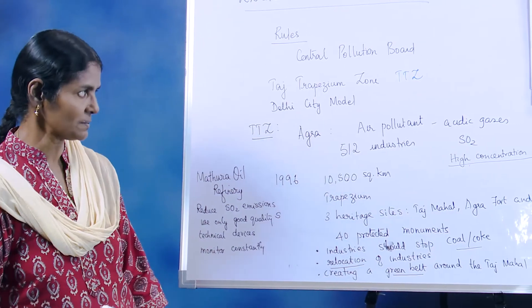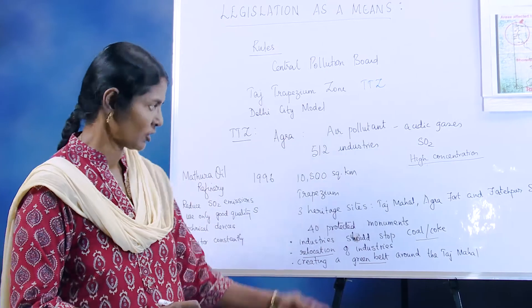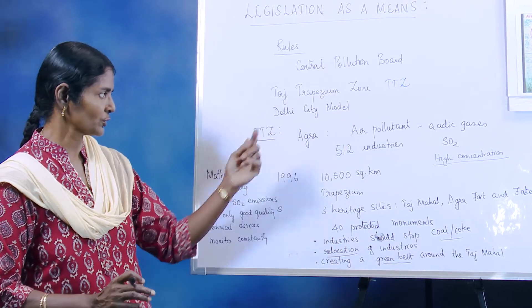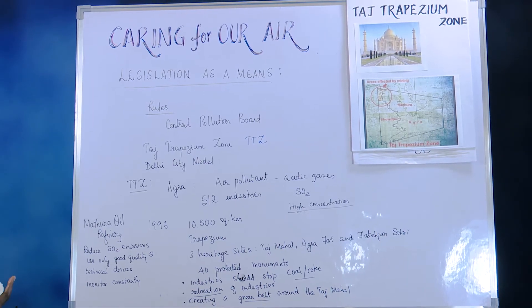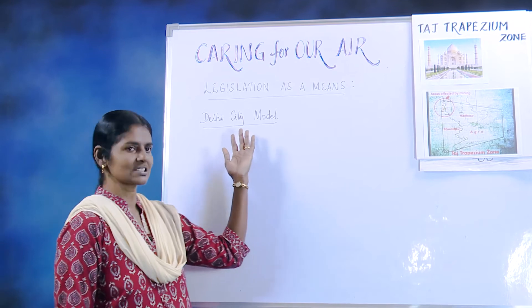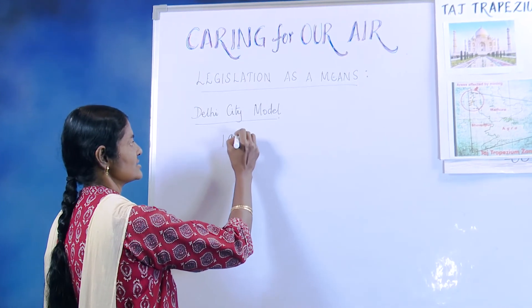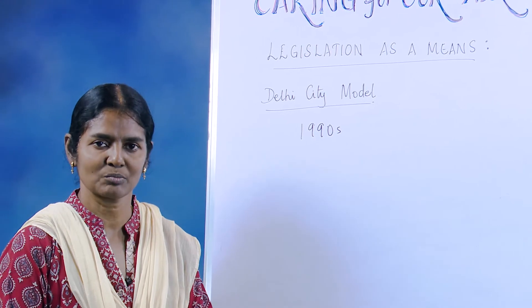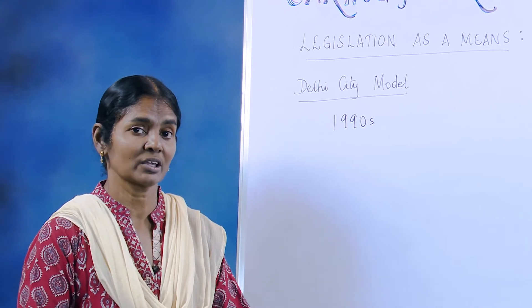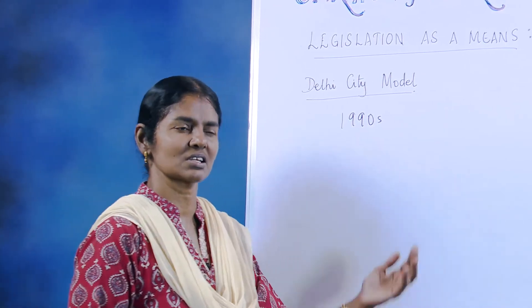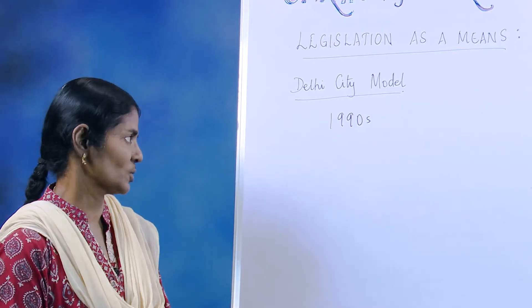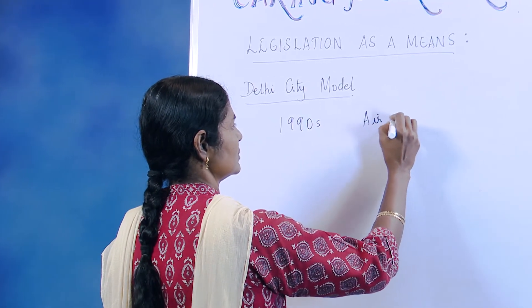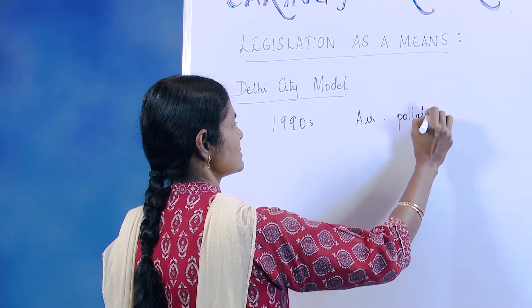All industries still emitting have been asked to relocate and a green belt has been built to protect the Taj Mahal and the other monuments around it. That covers the Taj Trapezium Zone. Moving on to the Delhi City Model: in the 1990s, Delhi was very highly polluted. Industries were flourishing, vehicles were more, population was more, and people from villages were rushing into Delhi for jobs, making the air highly polluted.